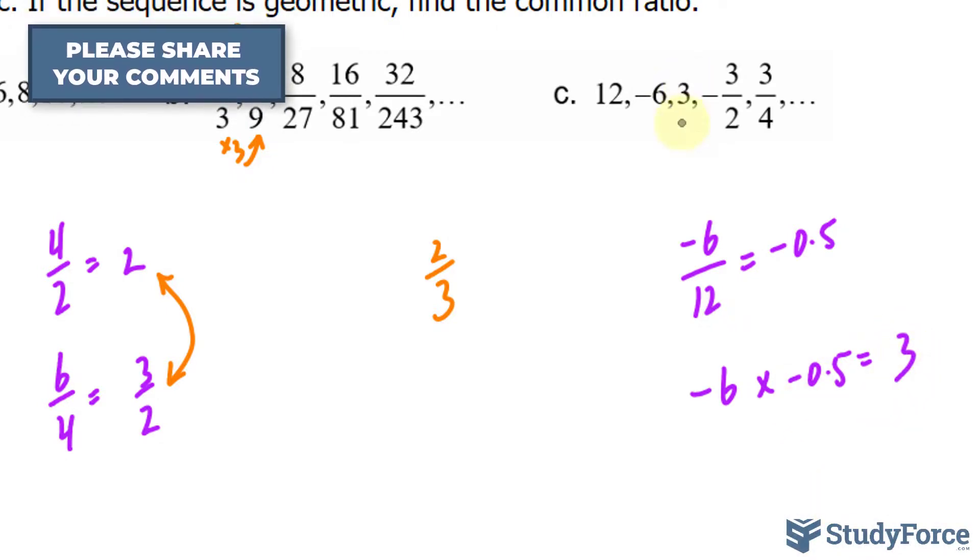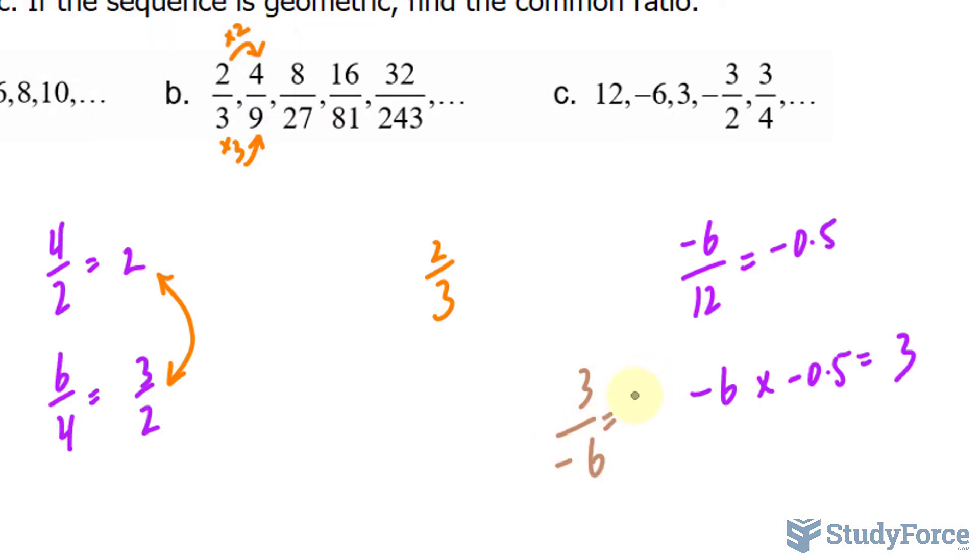Another way to look at it is if I take 3 divided by negative 6, I get again negative 0.5. That's a common constant that is used throughout each term. And there you have it. That is how to determine if a sequence is geometric.